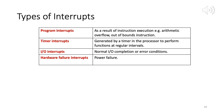Now on slide 15: different categories of interrupts. We can have program interrupts (as a result of instruction execution — e.g., arithmetic overflow when a register can only handle 16 bits but receives 32), out-of-bounds instructions (trying to access memory you are not supposed to access), timer interrupts (generated by a timer in the processor at regular intervals), IO interrupts (normal IO completion or error conditions), and hardware failure interrupts (such as power failure).